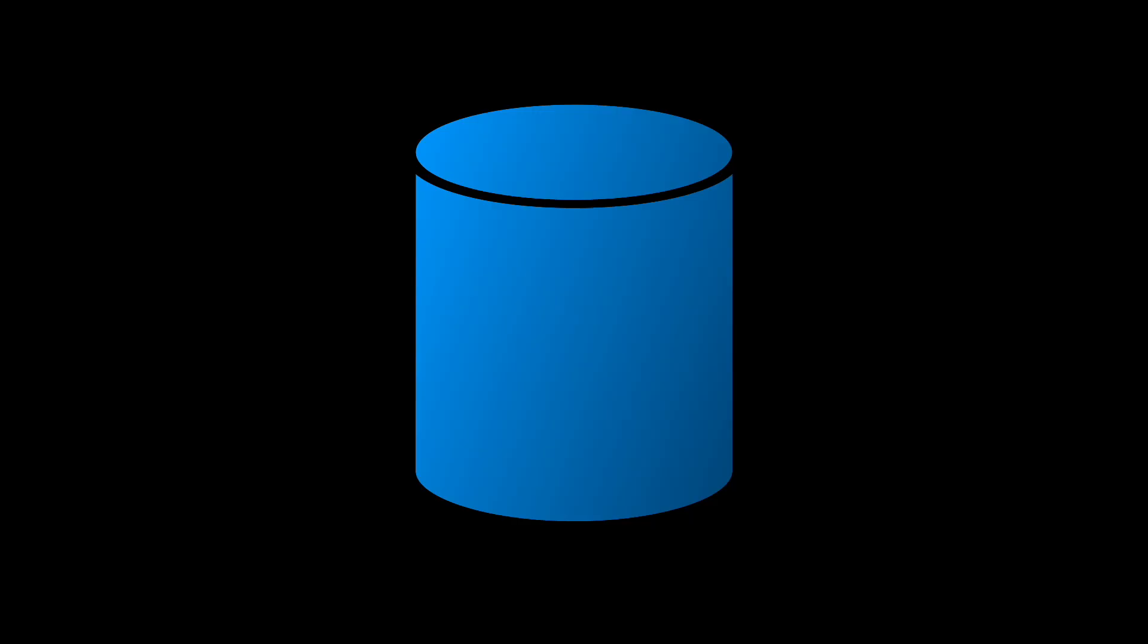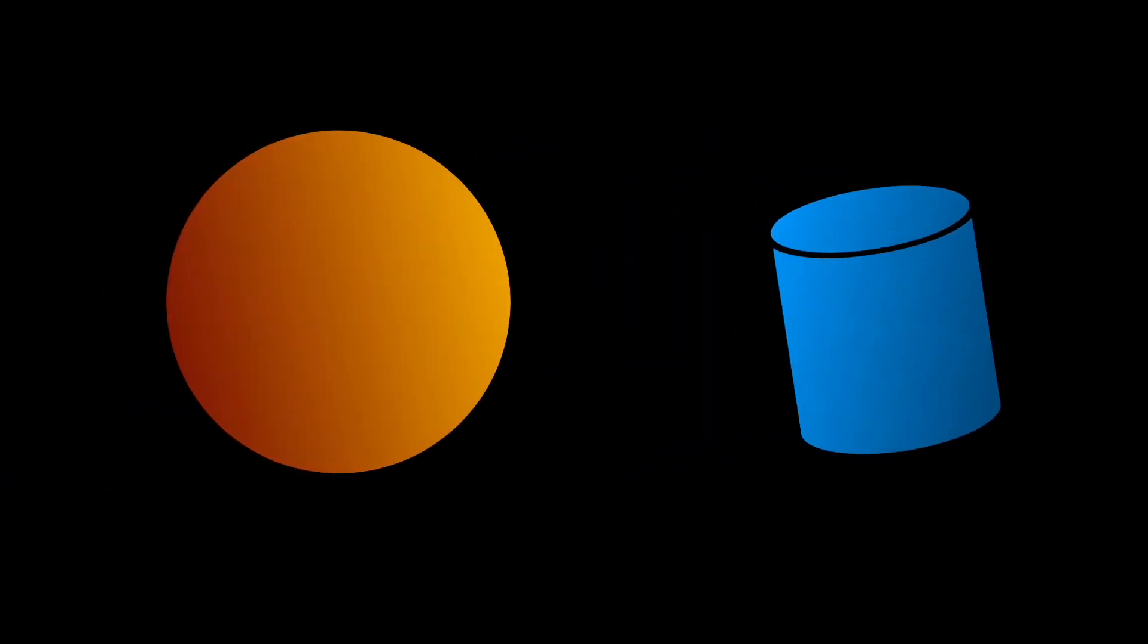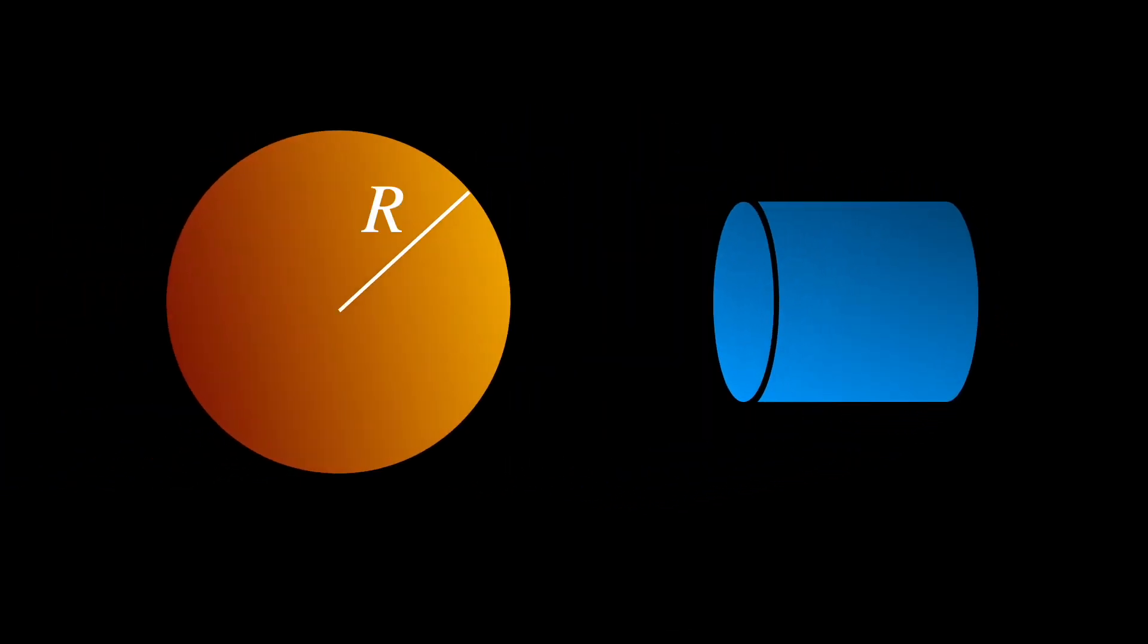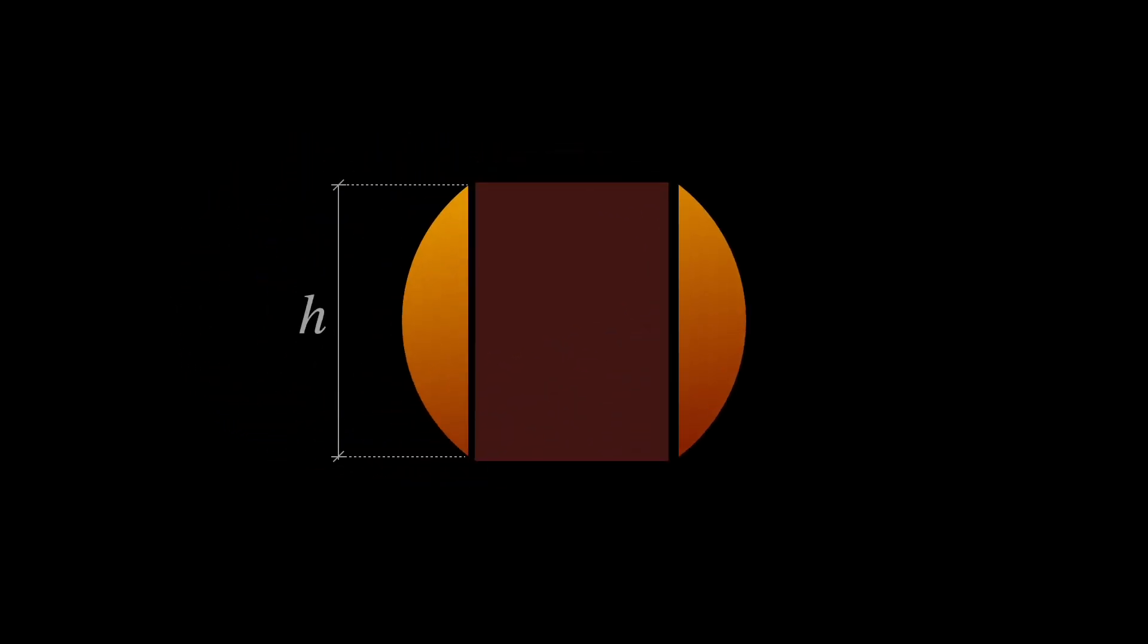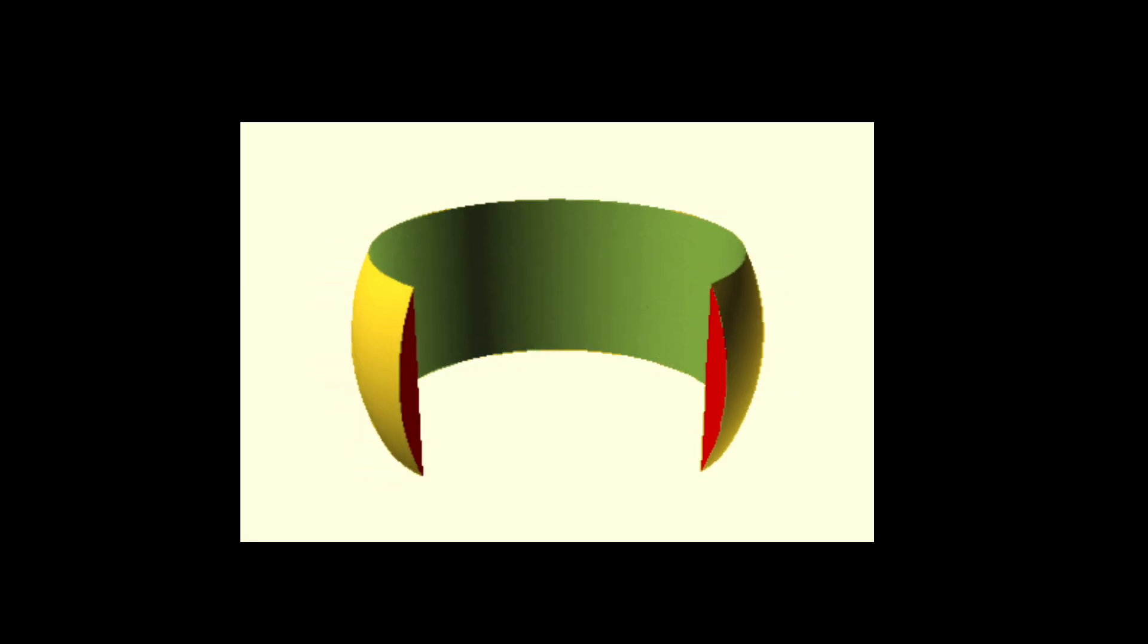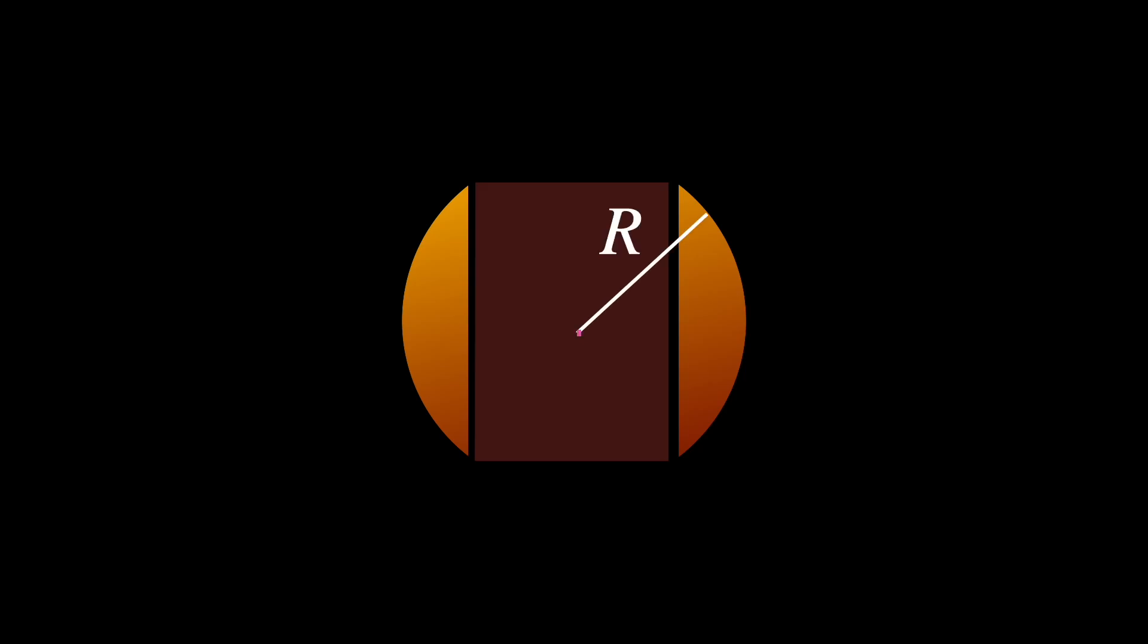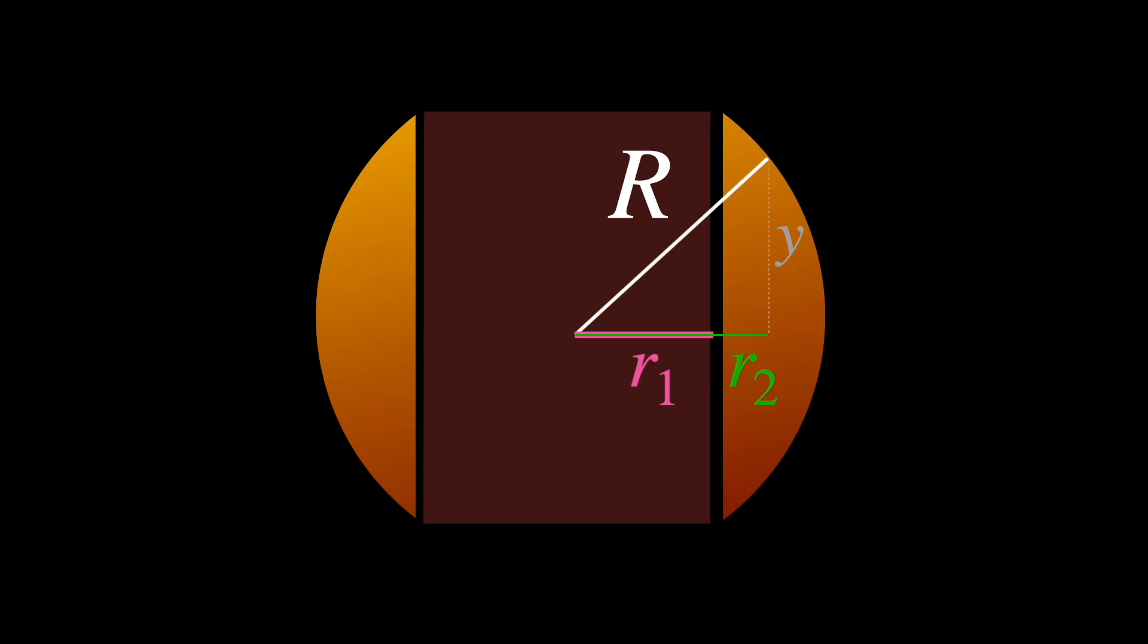Let us see now the napkin ring problem. Assume a right circular cylinder whose axis goes through the center of a sphere with radius capital R. Let H be the height of the cylinder segment that is within the sphere. This band is the region of the sphere that lies outside the cylinder. There are three radii involved here. The first one we already talked about, namely capital R, or the radius of the sphere.